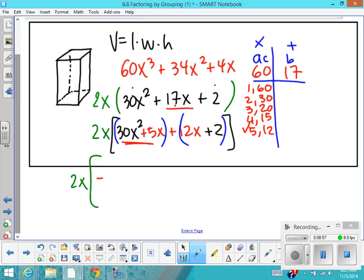And then I'm going to factor out a GCF here. So here, my GCF is 5x, and it's times the quantity of 6x + 1. And then here, my GCF is 2, times the quantity of 6x + 1.